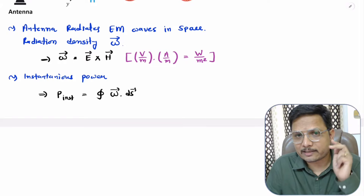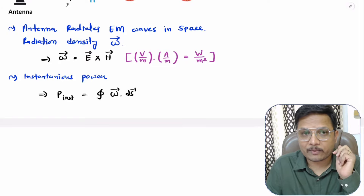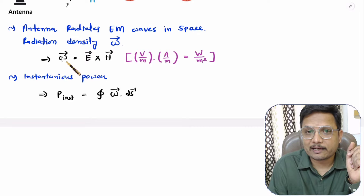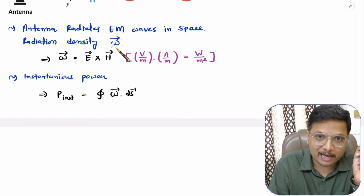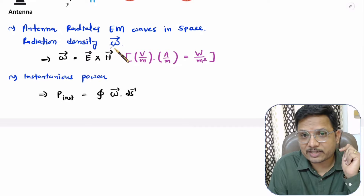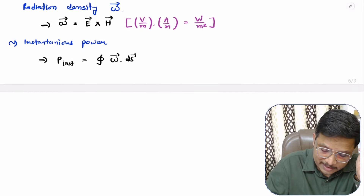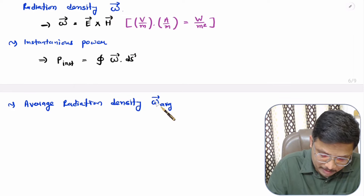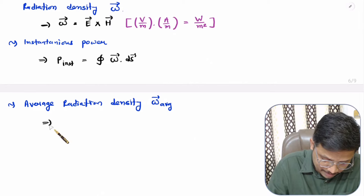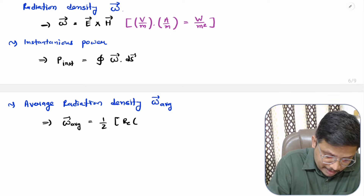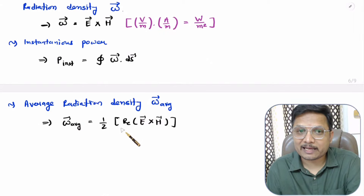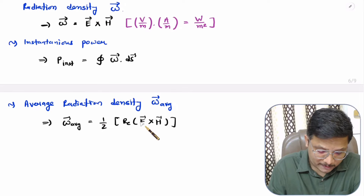Usually we do not calculate instantaneous power; we calculate average power. To calculate average power, you need to calculate average power density. Instead of radiation density W, you identify average radiation density W_average, which is calculated as W_average equals half of the real component of E cross H.